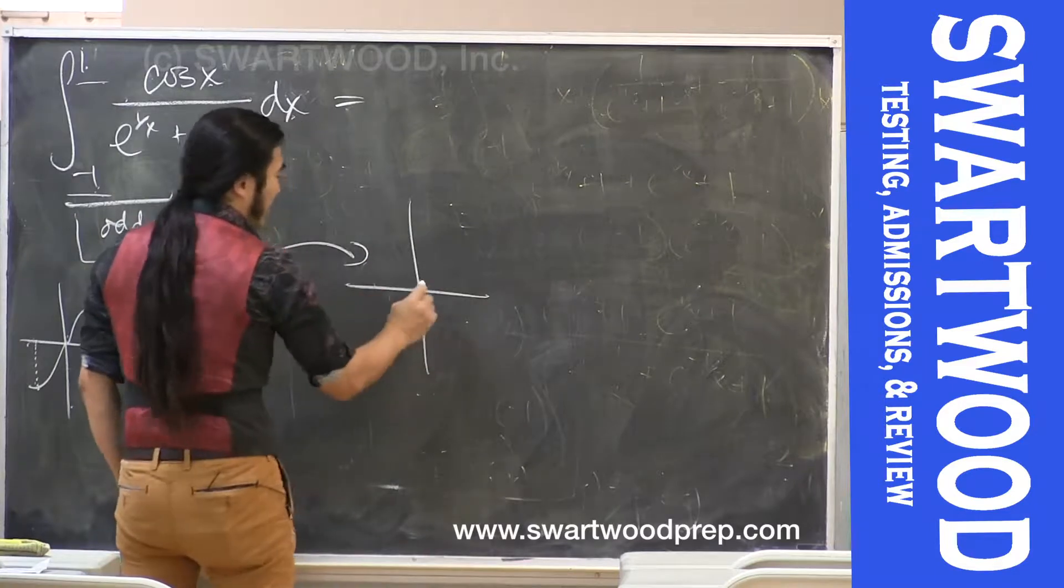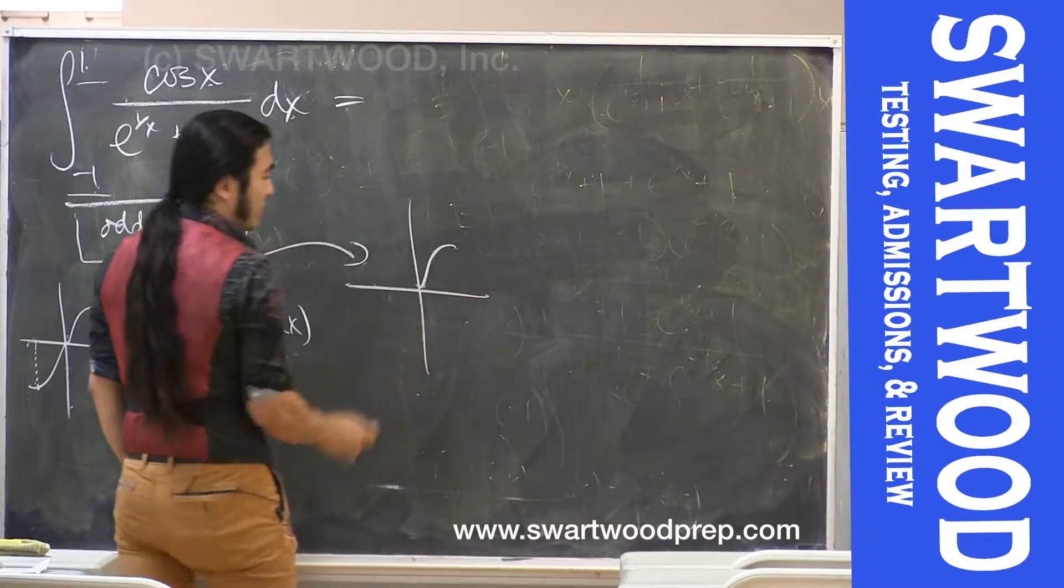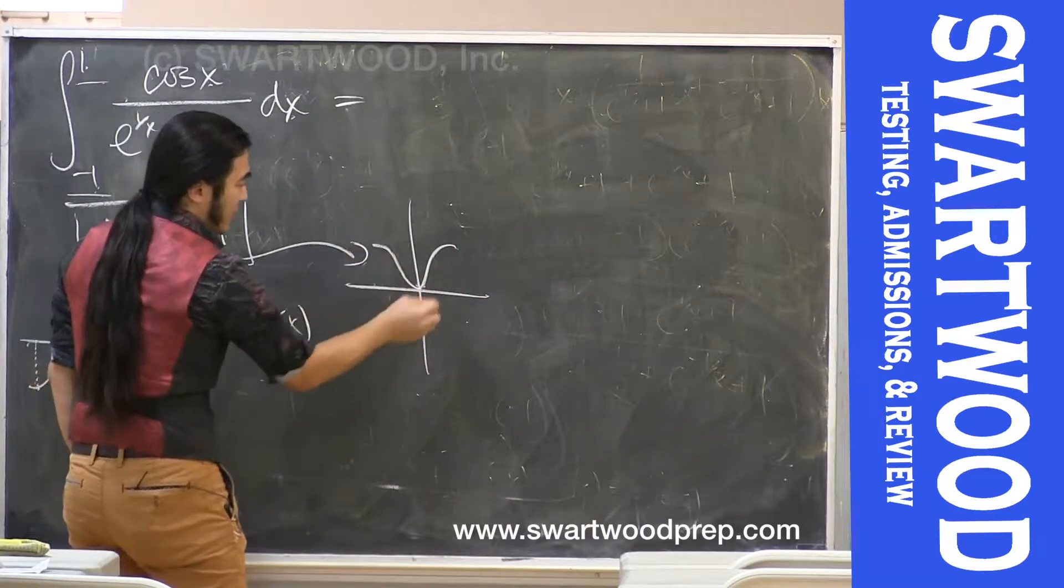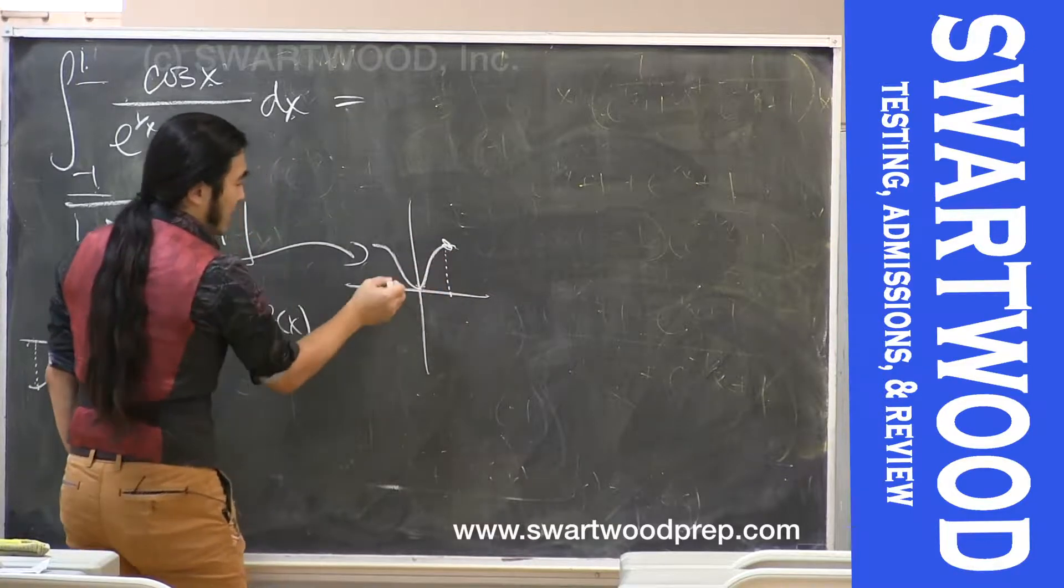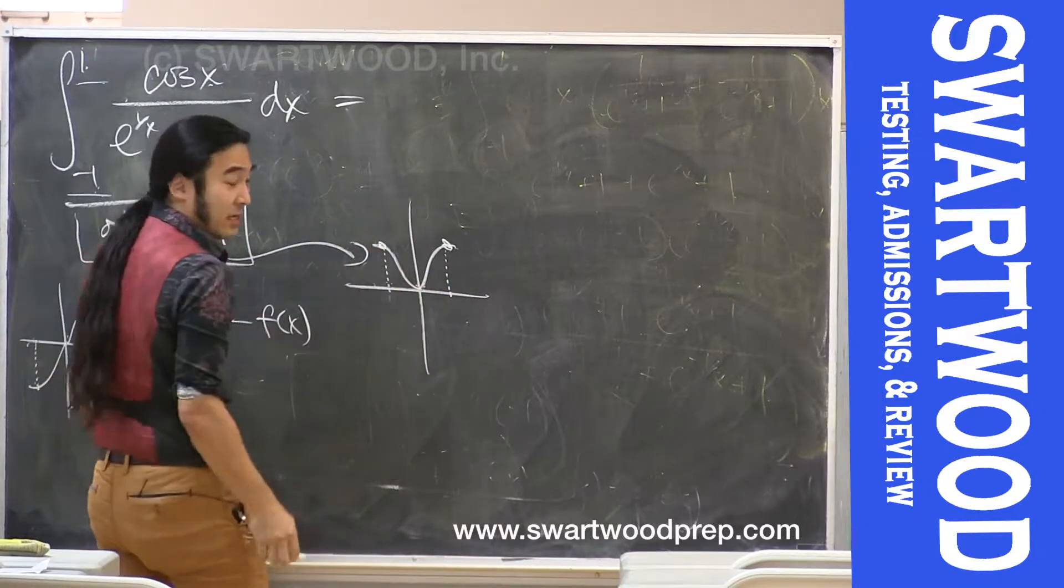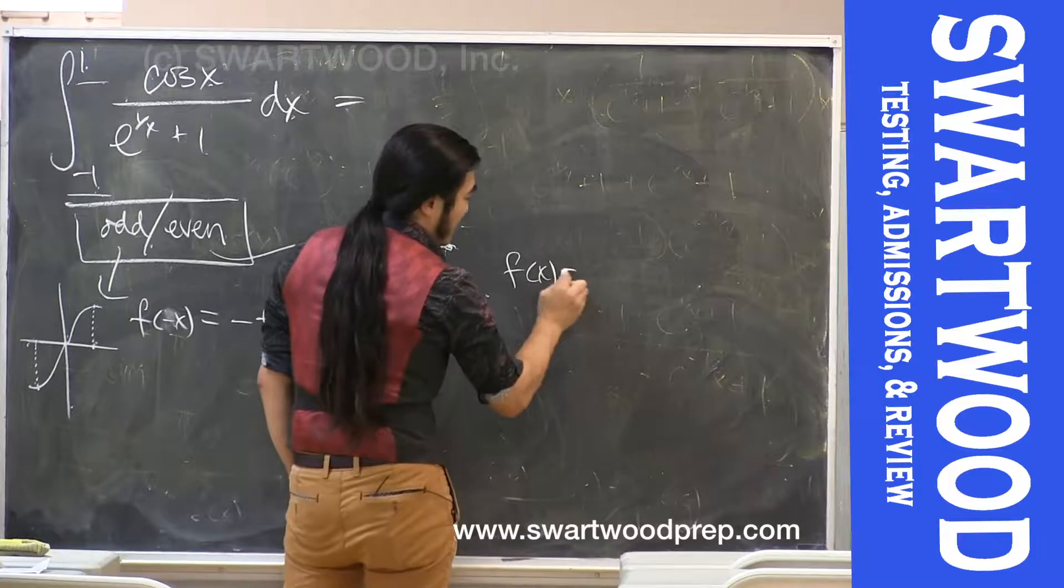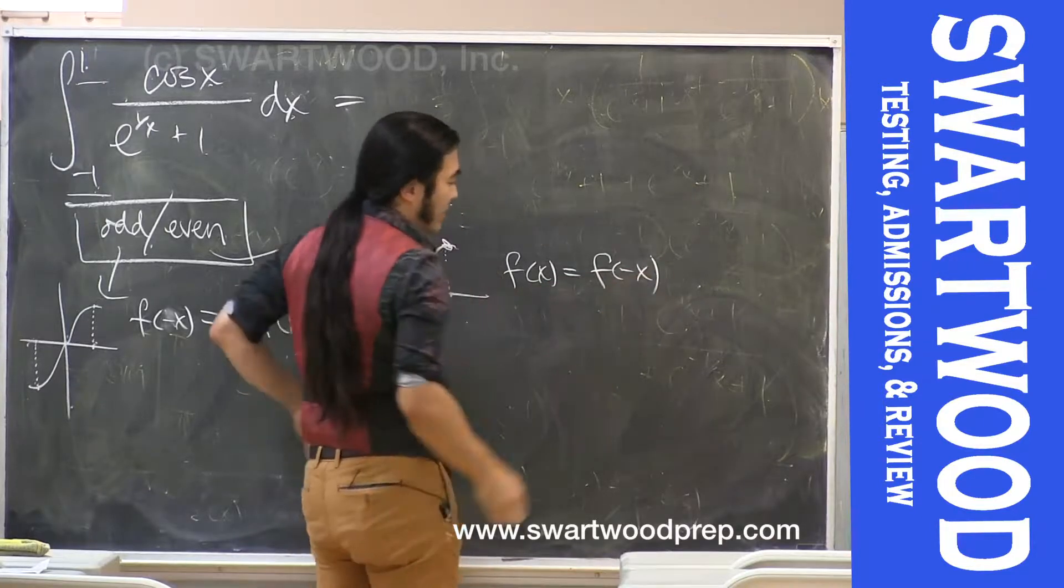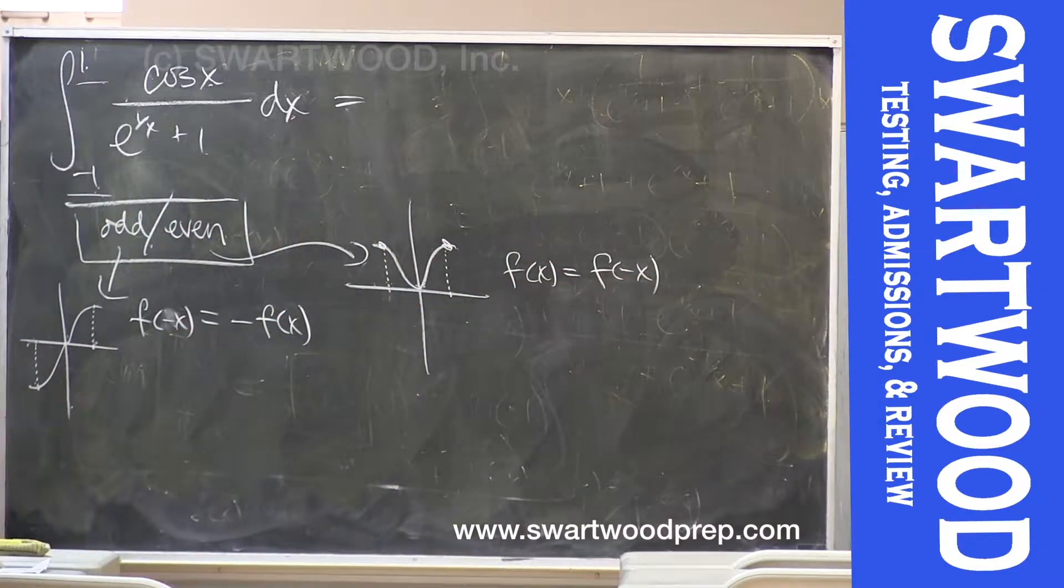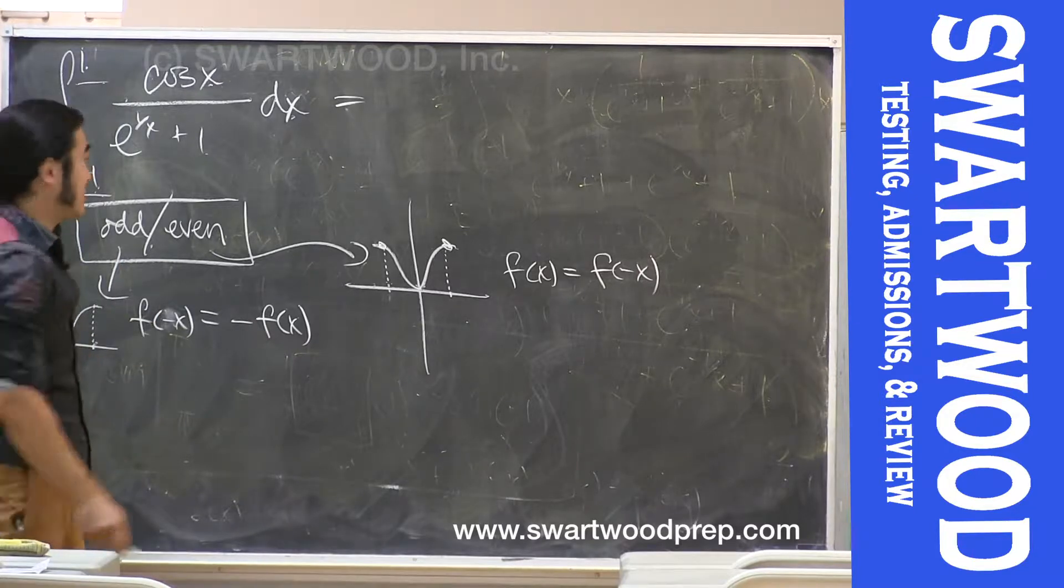What's it mean to be even? Even is even prettier. It just means that if you do a certain amount up here, you're going to do the same amount up here. So if you go to the right, you get a certain height. If you go to the left, you should get the same height. That means in terms of symbols, f of x is equal to f of negative x. Whether you go to the right or left, you're going to get the same height value. Okay, no big deal. So then, how is that going to help us?